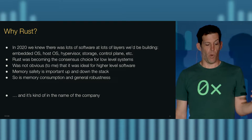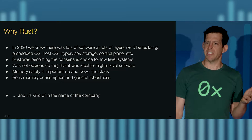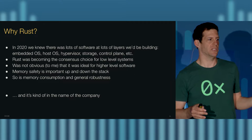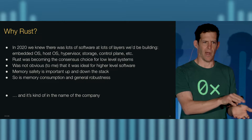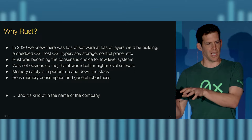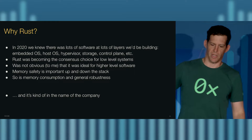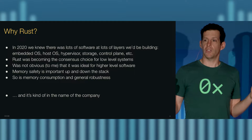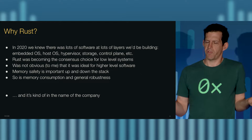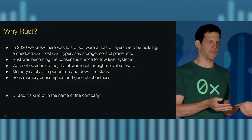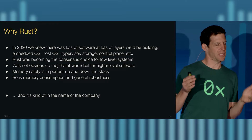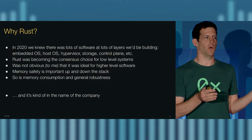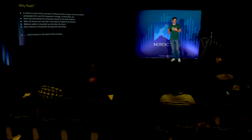So why Rust? Back in 2020, when we really started building this thing, we knew there were lots of different components — an embedded operating system for low-level controls of the CPU and power regulators, a host operating system, virtualization layer, storage software. For low-level software in 2020, Rust was becoming a pretty consensus answer. Low-level systems folks were by and large moving towards Rust, and if anything that has become more and more true. But it was not clear, at least to me, that Rust was the appropriate language for higher-level software.